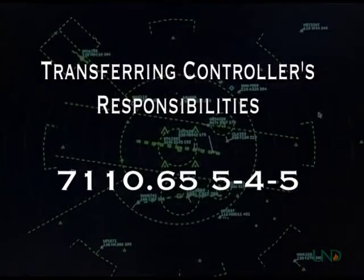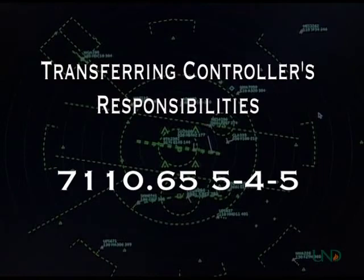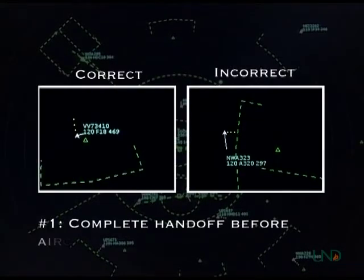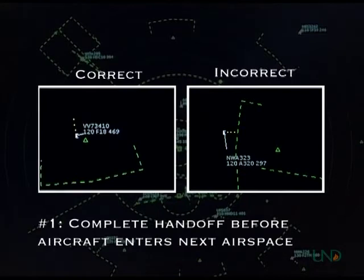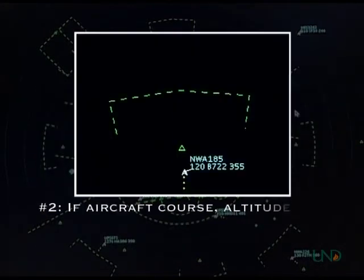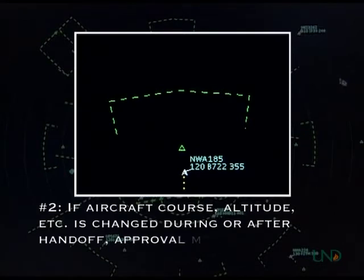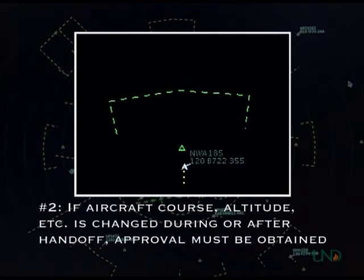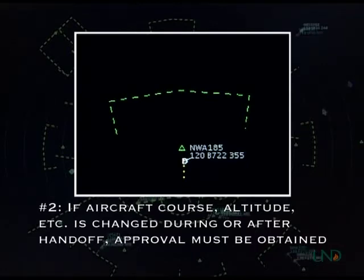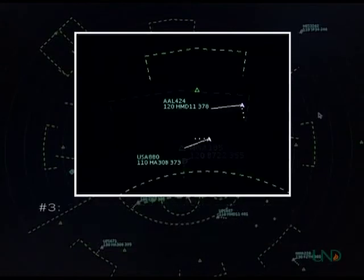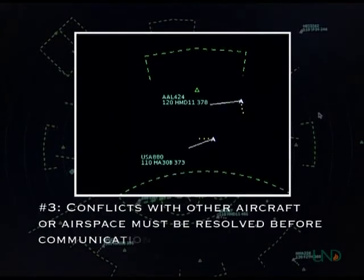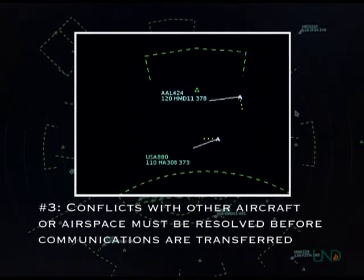Both the transferring and receiving controller have certain responsibilities when transferring radar identification. The controller initiating the transfer has five primary responsibilities. First, he or she must complete a radar handoff before the aircraft enters the next controller's airspace. Second, if any changes to the aircraft's heading, altitude, or data block information are changed during or after the handoff, verbal approval must be obtained from the receiving controller unless specified in a letter of agreement or facility directive. Third, before communications are transferred, any conflicts with other aircraft or airspace boundaries must be resolved and any necessary coordination with other controllers must be completed.